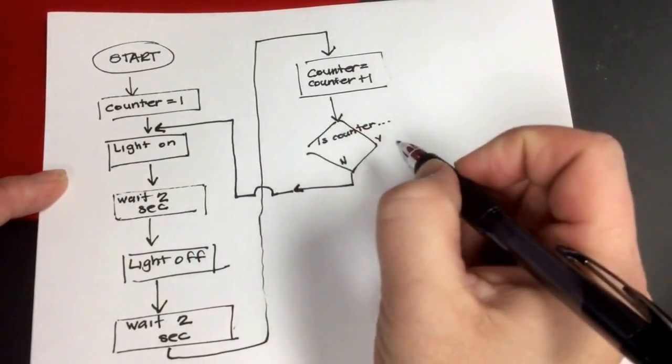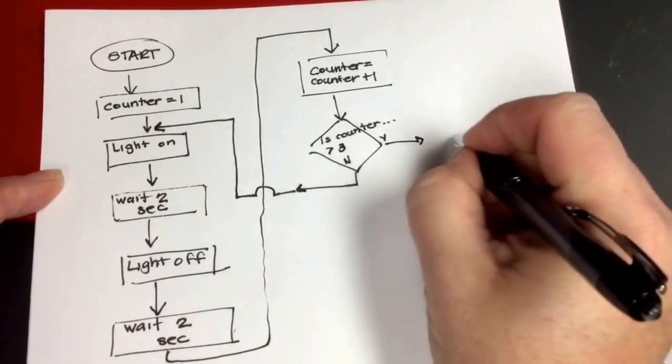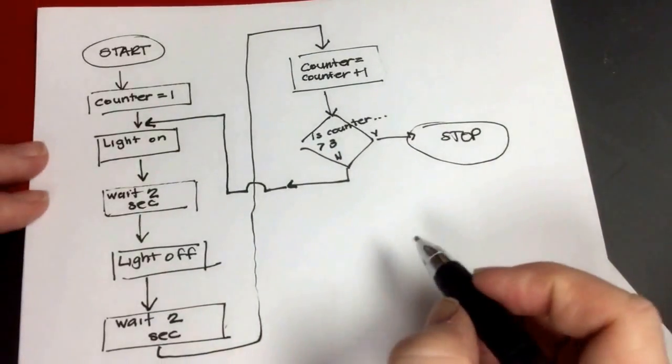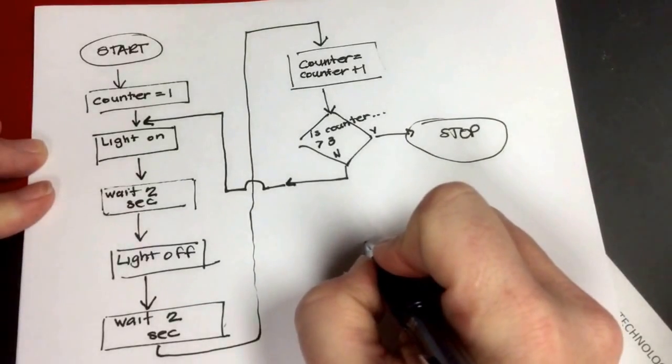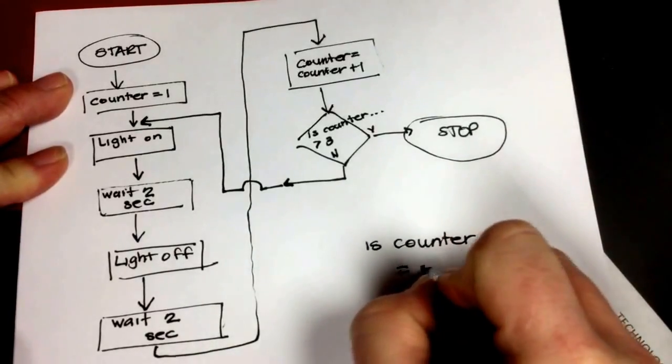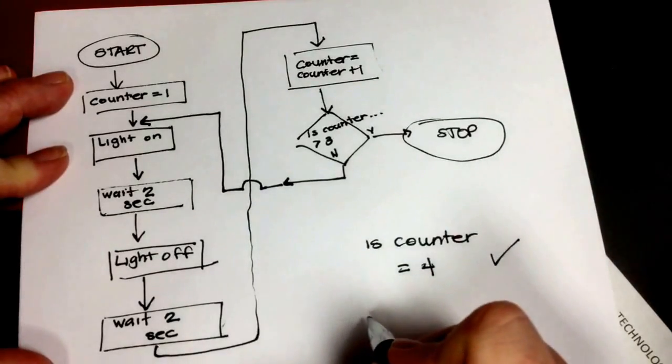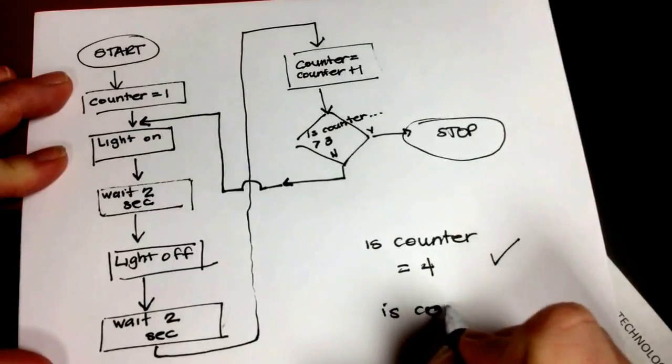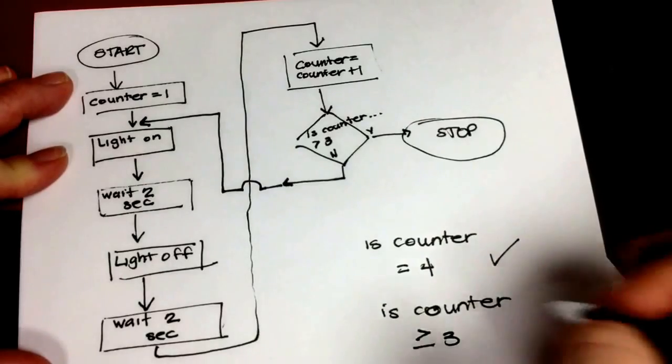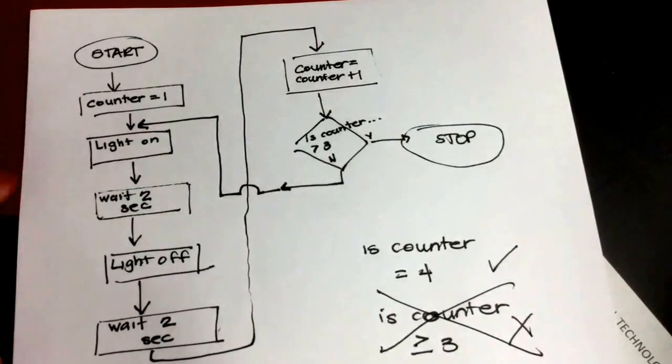So this time, I could ask, is the counter greater than three? No. Loop back. Yes. Stop. What question could I have asked instead of, is counter greater than three? I could have also asked, is counter equal to four? That one's good. I could not ask, is counter greater than or equal to three. That one doesn't work for me. So I can't do that one because when it was equal to three, it wasn't done yet. I needed it to get to four because of the location.